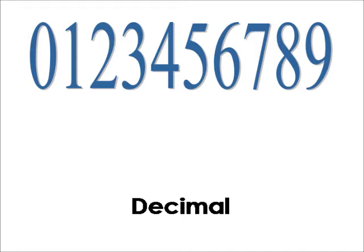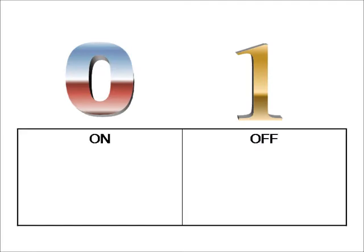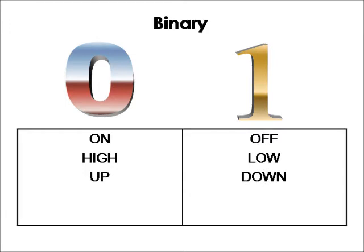The prefix 'dec' is Latin for the number ten. However, in most computers and electronics in general, they speak in only whether or not a particular part in their system is on or off, and that requires two numbers: zero and one. These two numbers can stand for on or off, high and low, up and down, and so on. This numbering system is known as the binary system — the prefix 'bi', Latin for the number two.